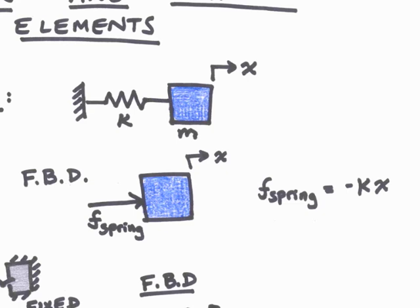For this system, our free-body diagram can be drawn as shown here. We have x pointing toward the right, defining the positive direction for this variable, and we have f spring also pointing to the right. Then the relationship between these variables is given by f spring equals minus kx.